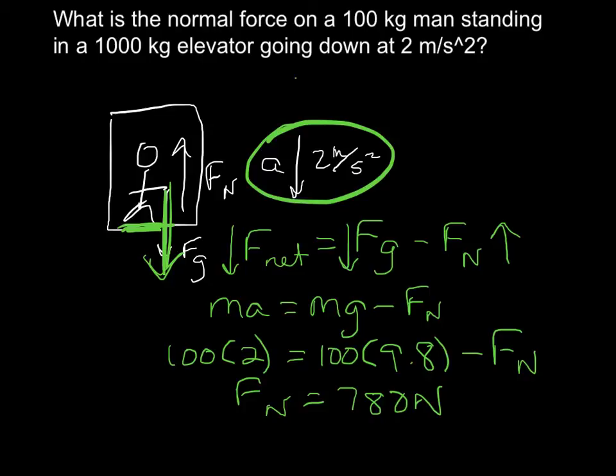If he was going down in free fall — say the elevator totally broke — he would be accelerating at the same rate as gravity, so there would be no normal force. He'd be basically weightless. That is kind of what the Vomit Comet does — you'll have to go Google the Vomit Comet airplane.